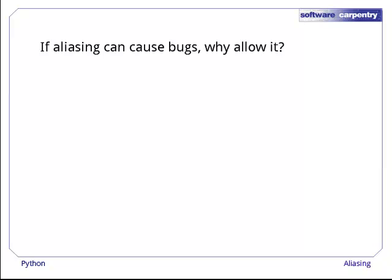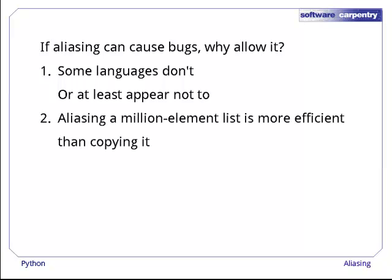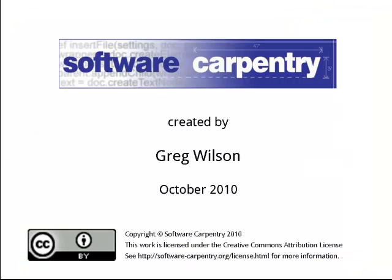So if aliasing can cause bugs, why does Python allow it? The first answer is that some languages don't, or at least go to great lengths to make it appear as if they don't. Python, like C++ and Java, does allow aliasing because having multiple references to a million element list is a lot more efficient than copying it over and over again. And sometimes we really do want to update structures in place via different routes. We'll see examples of that in the next episode.